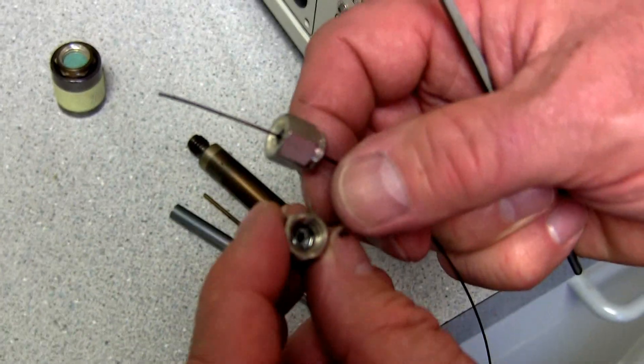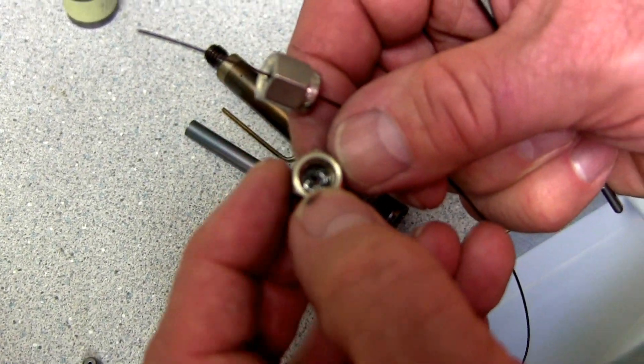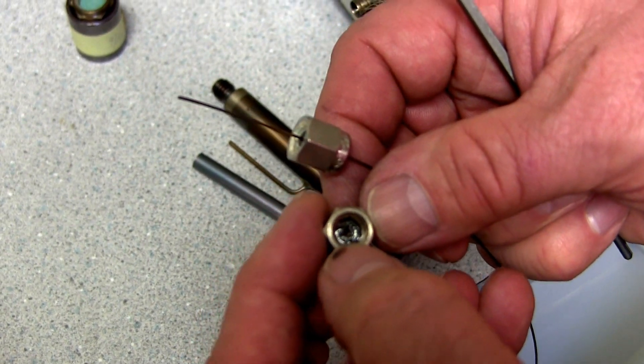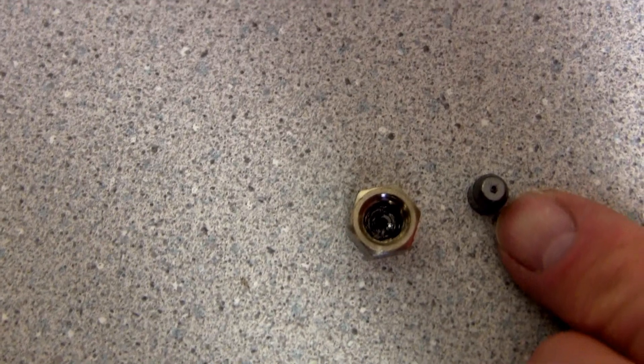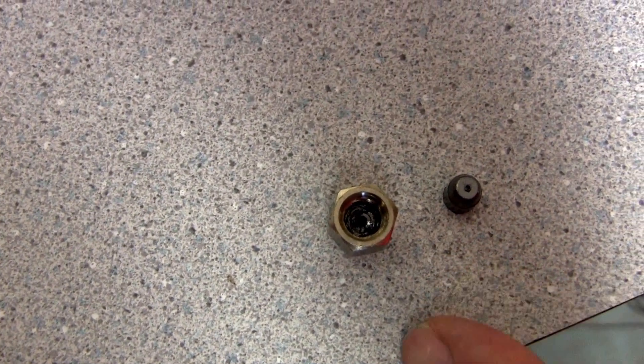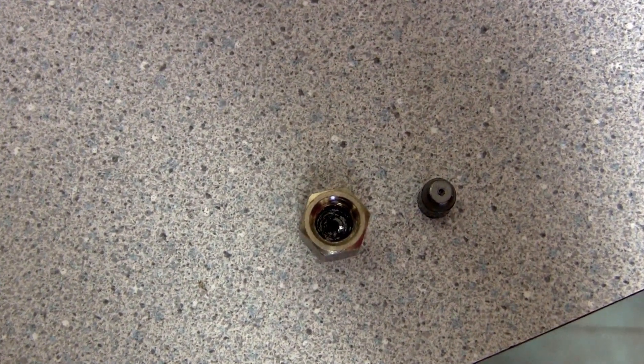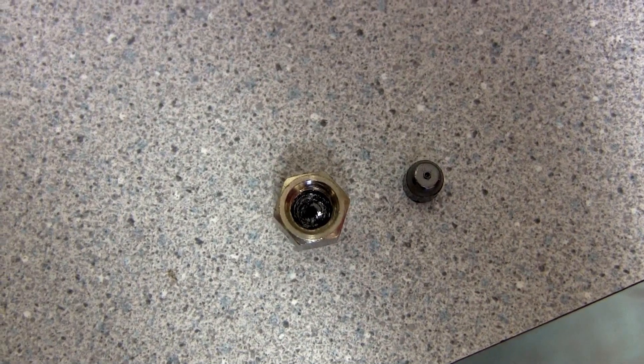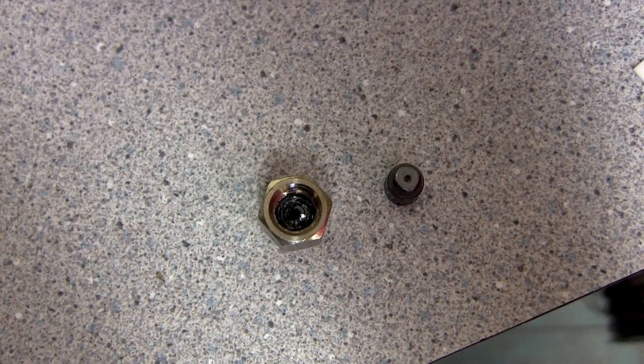When they get damaged, usually what happens is the ferrule falls apart inside the nut. Some of the graphite is still stuck in the nut, but the front part of the ferrule, the conical part, usually sticks in the fitting that you're removing the nut from. That's the one that you have to be careful not to lose down in the oven because it could cause some problems if it contacts the oven heater.